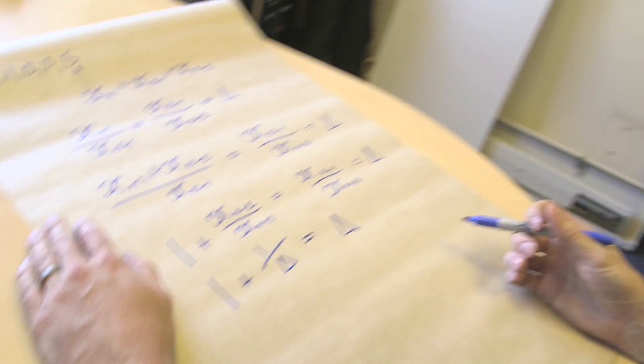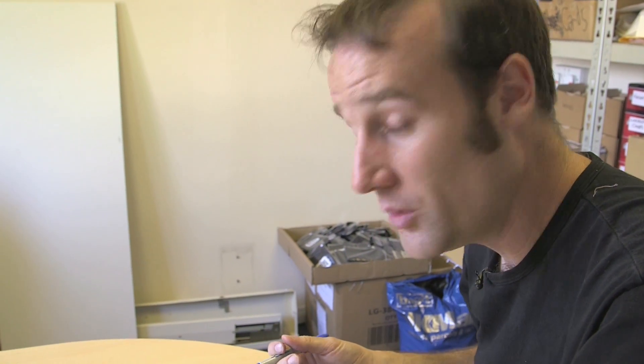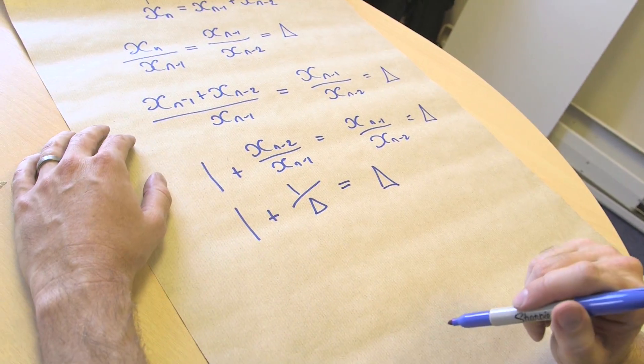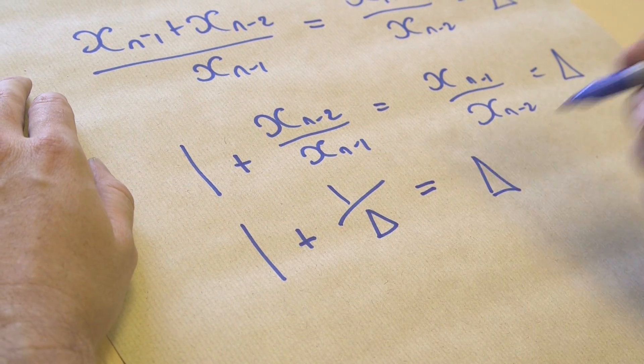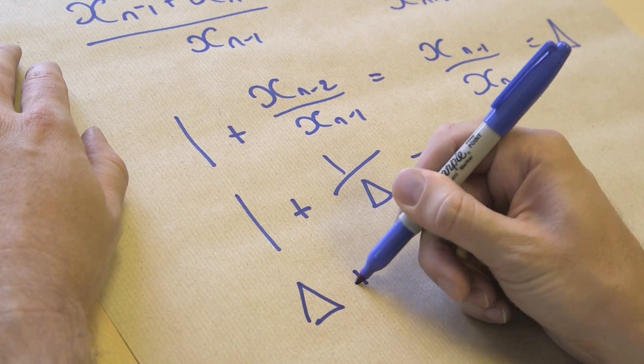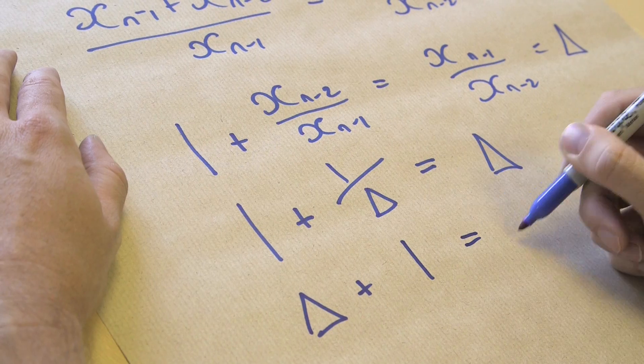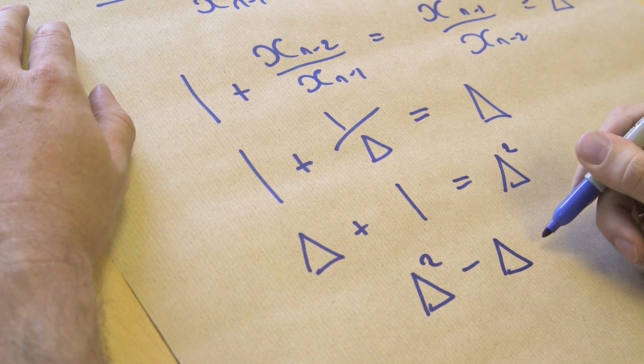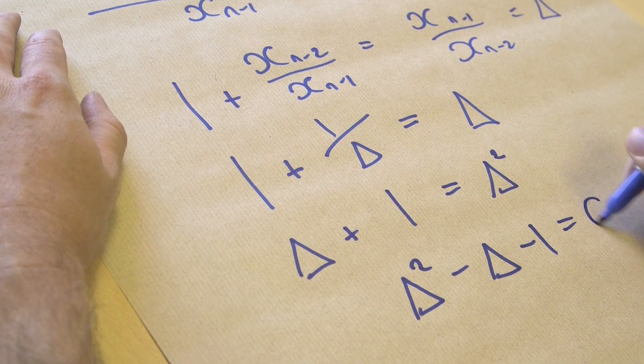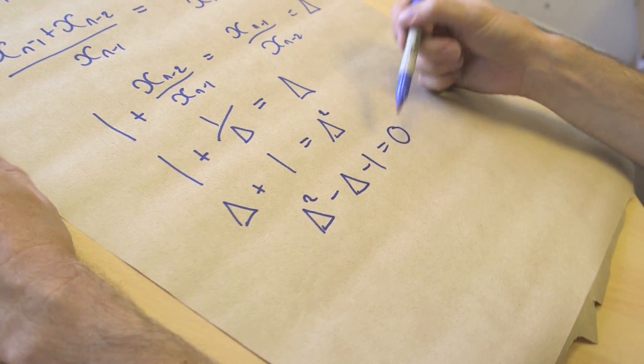What ratio could that possibly be? Well, let's work it out because we can turn this into a quadratic. If I multiply through by triangle, it equals that plus 1 equals triangle squared. And so delta squared minus delta minus 1 equals 0. So all I've done is rearrange that formula.